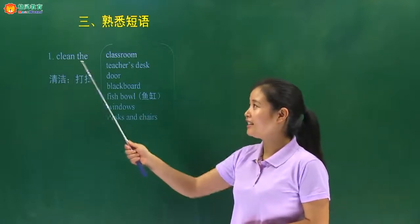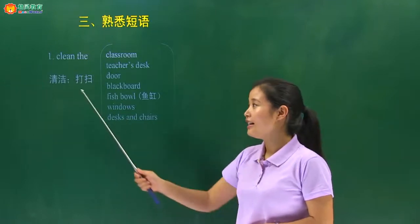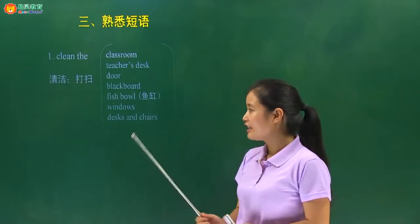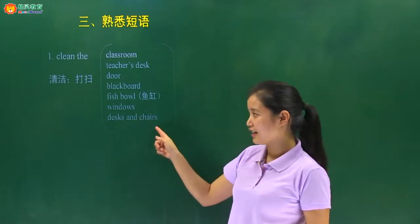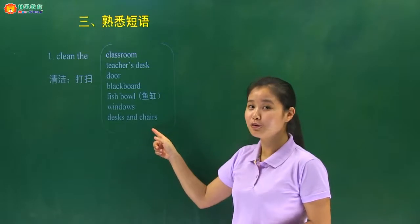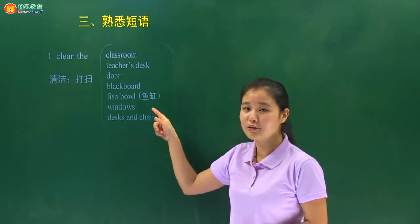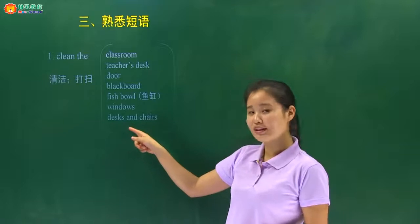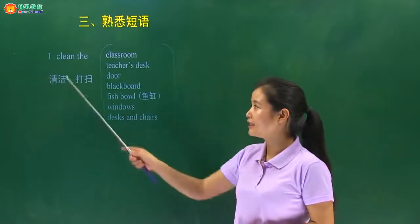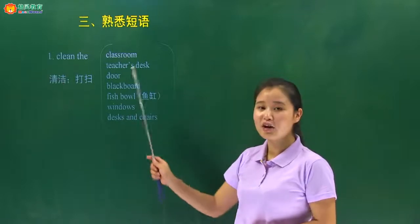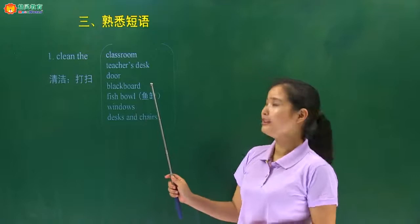最后一个，clean the desks and chairs，打扫桌椅。这里我们看一下，为什么这些单词加了S呢？因为它是复数——不是一扇窗户或一个桌椅，加了S表示复数。好，这是我们的 clean 跟一些名词在后面，打扫清洁，希望同学们能够记住。